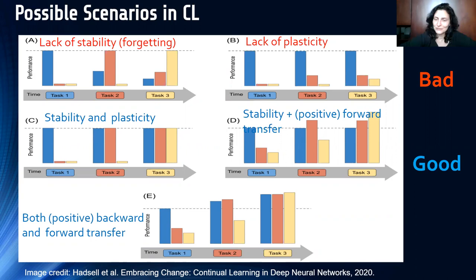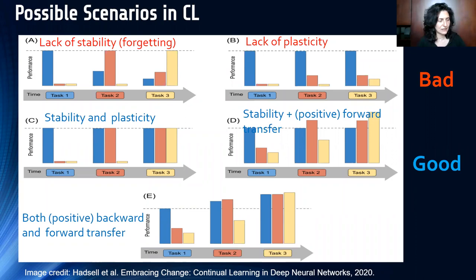Lack of plasticity or ossifying is another situation where you learn well on a dataset but fall into a local optimum and are unable to adapt to new tasks. The ideal situation is stability and plasticity together — you adapt, you don't forget, and you may even improve performance on previous tasks while learning new ones. Understanding when each scenario occurs is still mainly treated empirically and algorithmically.